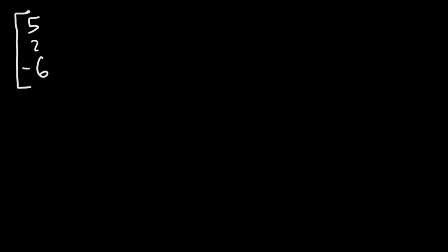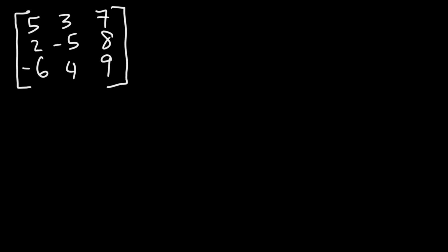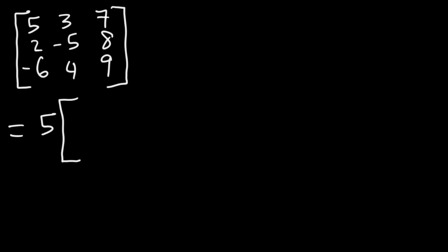So let's work out an example. Let's say we want to find the determinant of this 3x3 matrix. Feel free to pause the video if you want to try it — and this is a 5, by the way, just in case it looks like an S. My 5s sometimes look like Ss. So the first thing we're going to write is the first element in the first row, which is 5. That number is in the first row, first column, and so it leaves behind four numbers: negative 5, 4, 8, and 9.